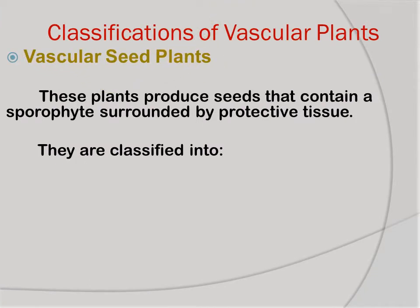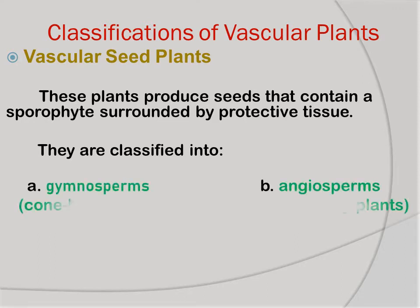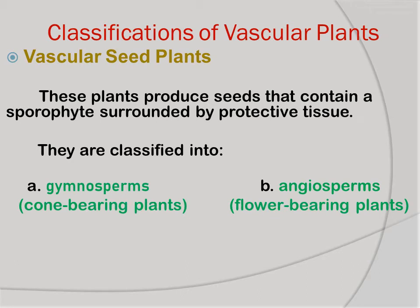Vascular seed plants are the most widely distributed throughout the earth. These plants are classified into gymnosperms and angiosperms. Gymnosperms are also called cone-bearing plants, while angiosperms are called the flower-bearing plants.